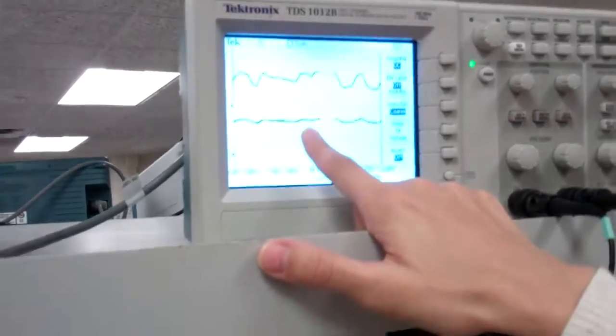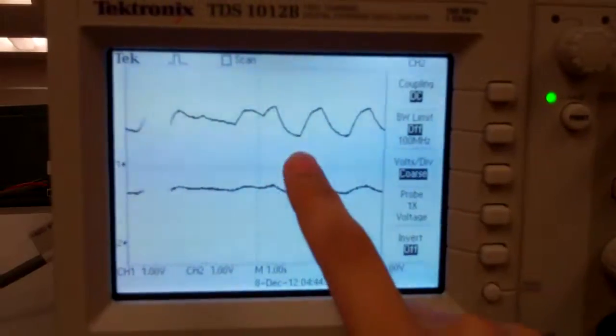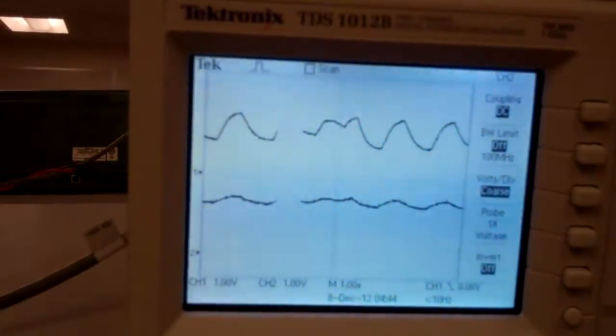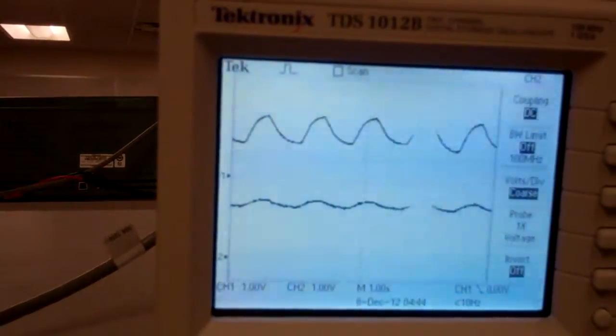So this is an unamplified thermistor on the bottom. This is what the thermistor is reading, and this is an amplified version, and filtered. That's what you're thresholding to make sure that the breath is still happening.